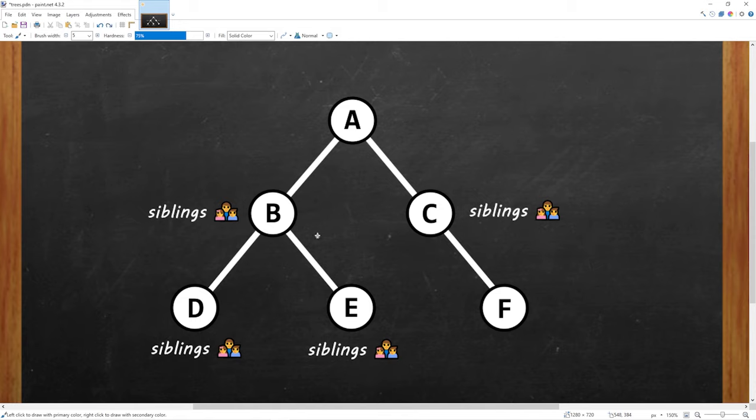Nodes D and E both share the same parent of B. So D and E are both siblings. The same thing goes with B and C. Nodes B and C share A as a parent. So these two nodes are siblings. It's just like a family tree.